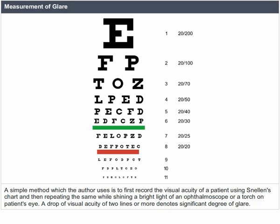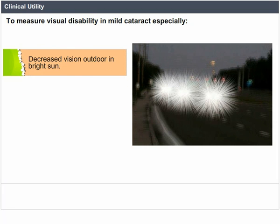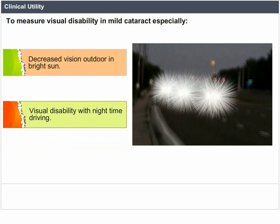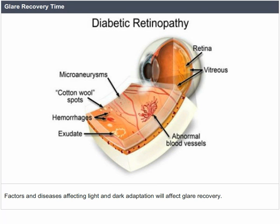Clinical utility: to measure visual disability in mild cataract, especially decreased vision outdoors in bright sun, and visual disability with nighttime driving. Glare recovery time: factors and diseases affecting light and dark adaptation will affect glare recovery. This is used to predict predisposition of a patient to retinopathy.